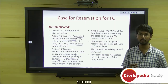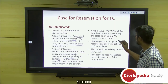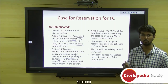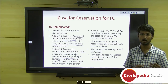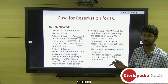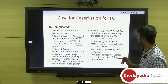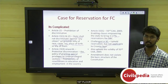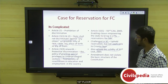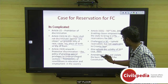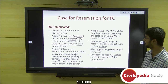The 93rd Constitutional Amendment Act of 2005 aimed at giving 27% OBC reservation in employment and education in both government and private institutions, including premier institutions like IIT and IIM. This was challenged in the Supreme Court, which upheld the amendment but stated it is not applicable to the creamy layer — those in backward classes whose economic background is stronger. The Court also held this amendment does not violate the basic structure of the constitution.